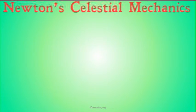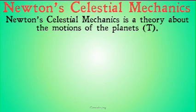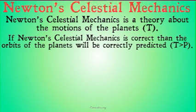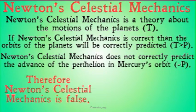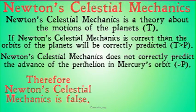Let's put this into a more specific context and talk about Newton's celestial mechanics — a theory about the motion of the planets. We take that as our T. If Newton's celestial mechanics is correct, then the orbits of the planets will be correctly predicted — T implies P. Newton's celestial mechanics does not correctly predict the advance of the perihelion in Mercury's orbit — not P. Therefore, Newton's celestial mechanics is false. Once again, this seems to be a classical standard use of modus tollens.